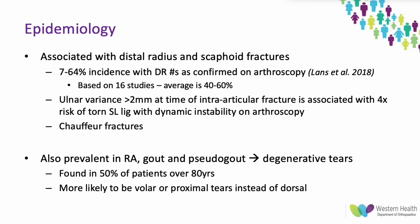If the x-ray shows a positive ulnar variance greater than two millimetres at the time of an intra-articular fracture, it has been shown to be associated with four times the risk of a torn scapholunate ligament with dynamic instability on arthroscopy. Besides traumatic injuries, the scapholunate can tear degeneratively — found in approximately 50% of patients over 80 years — and is more prevalent in rheumatoid arthritis, gout, and pseudogout.